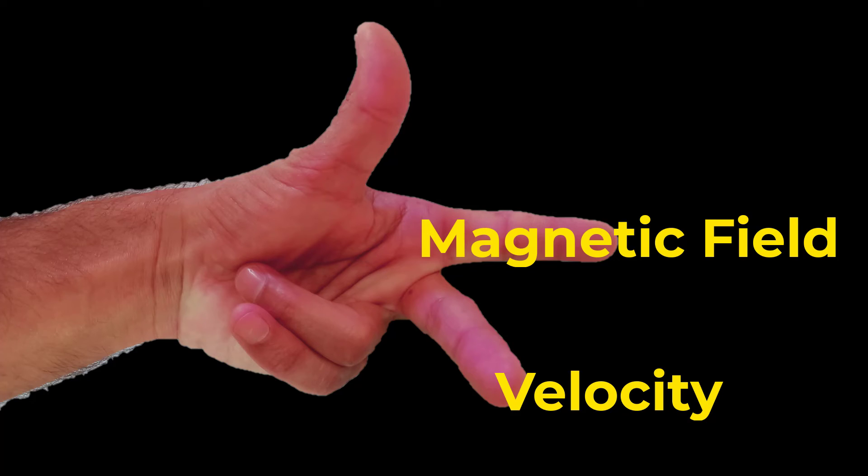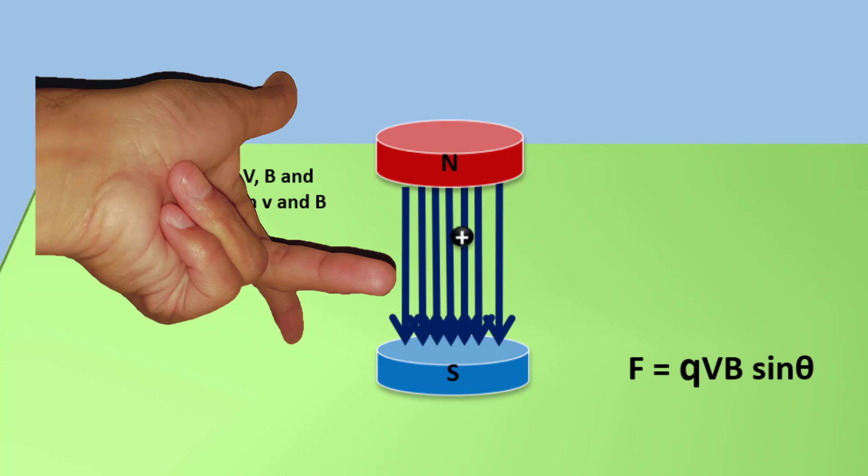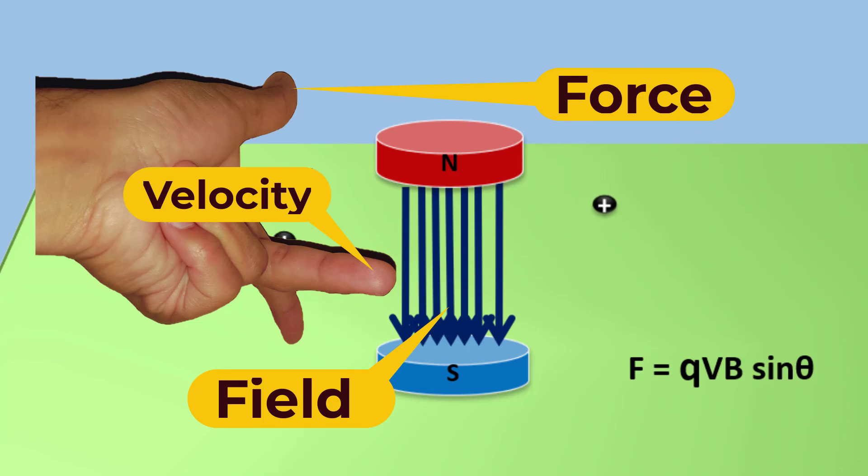Then the thumb will indicate the direction of the magnetic force acting on a charge particle moving in a magnetic field.